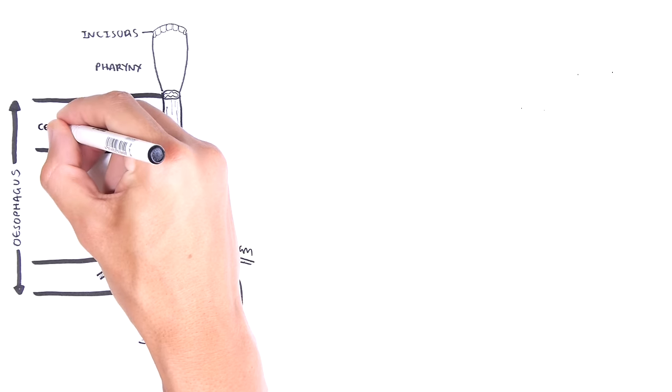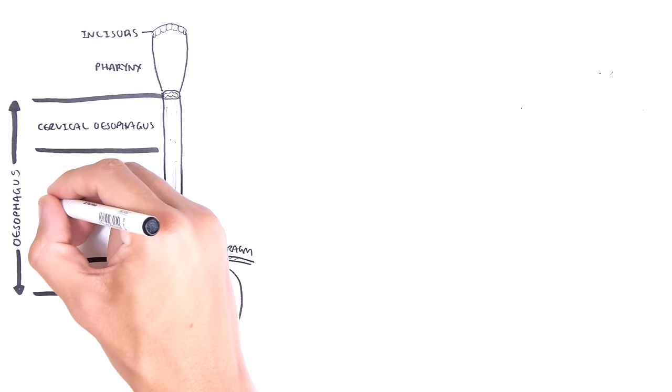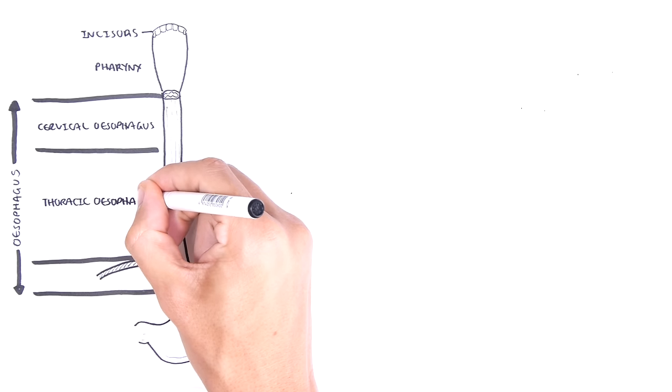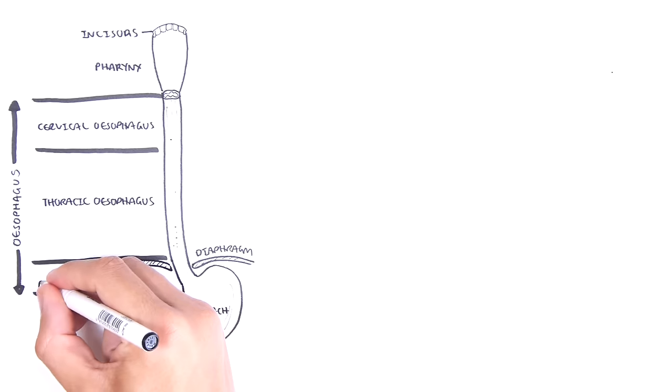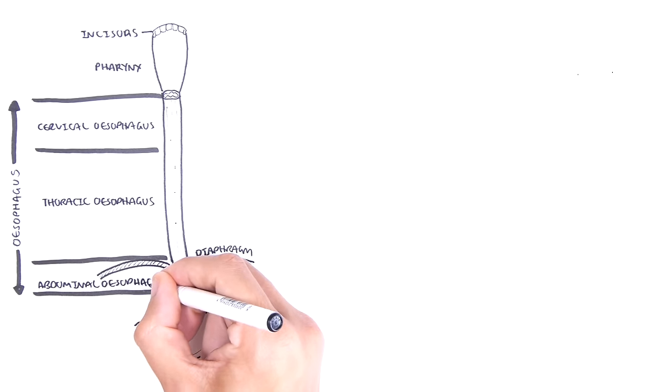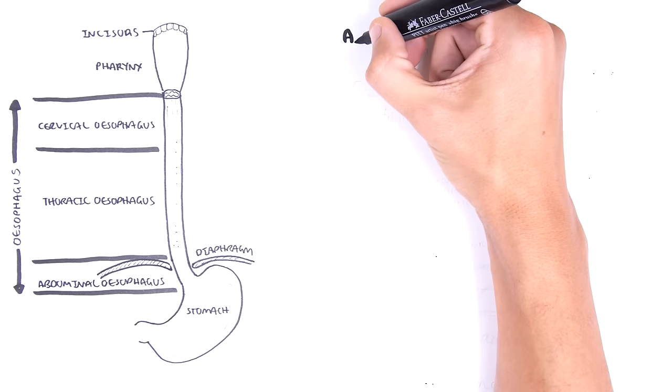The cervical esophagus extends from the pharyngoesophageal junction to the suprasternal notch. The thoracic esophagus extends from the suprasternal notch to the diaphragmatic hiatus. The abdominal esophagus extends from the diaphragmatic hiatus to the orifice of the cardia of the stomach.